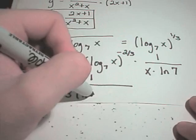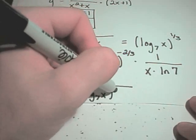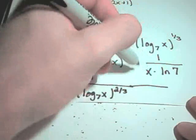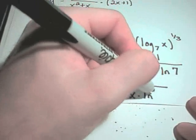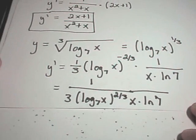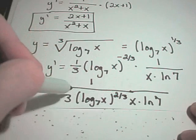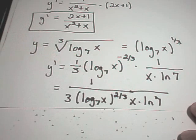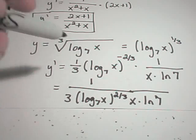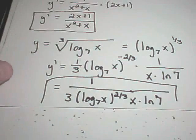You have log base 7 of x raised to the positive 2/3 power. I've got an x in the bottom, and then I have my ln of 7 also in the bottom of my fraction. You could put the x out front, the ln of 7 out front, however you want to rewrite it since it's all being multiplied. But this is basically your derivative.